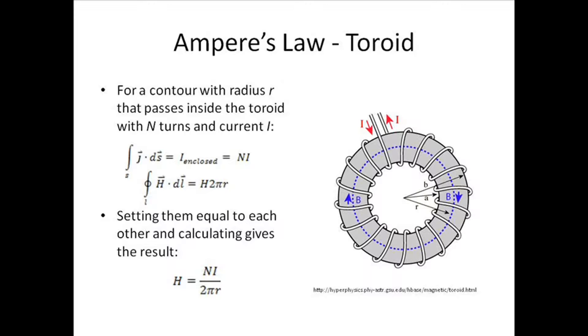By setting them equal to each other, we can calculate the magnetic field H. H is equal to NI over 2 pi r.